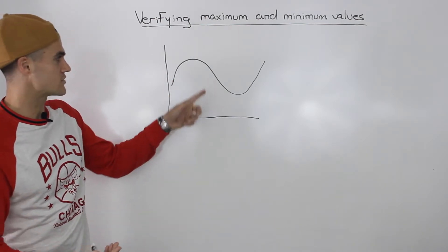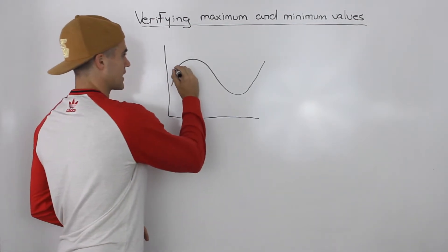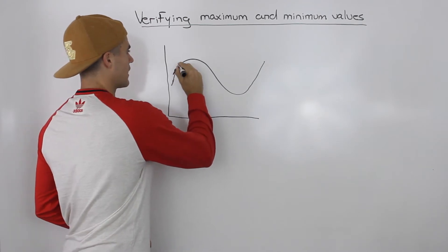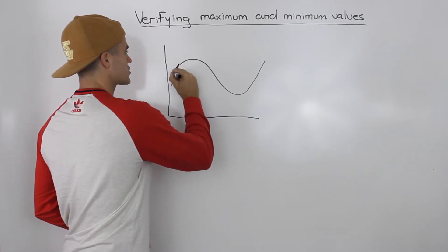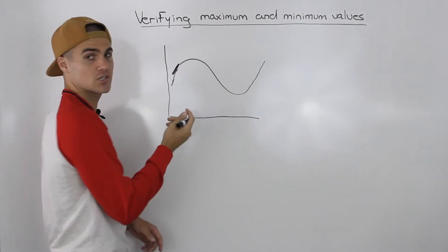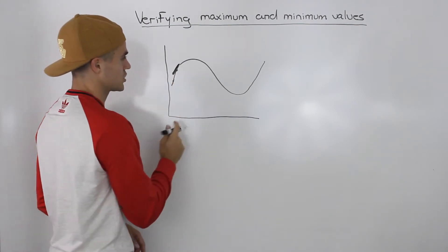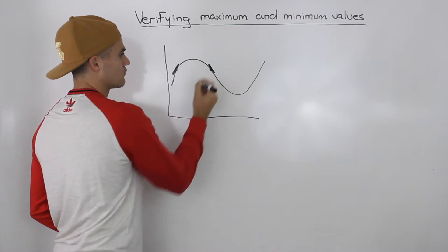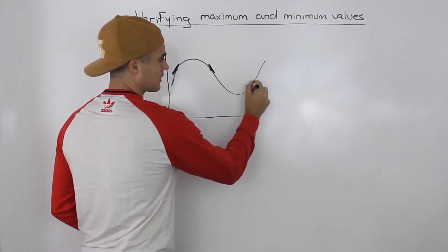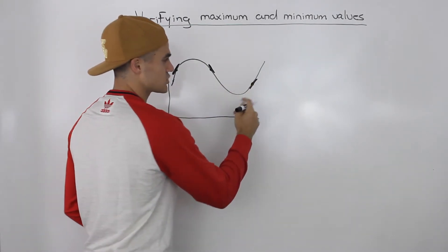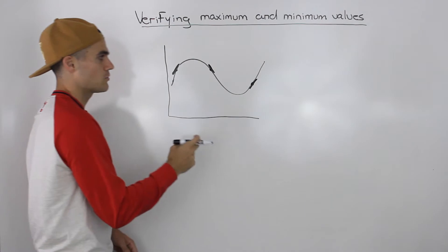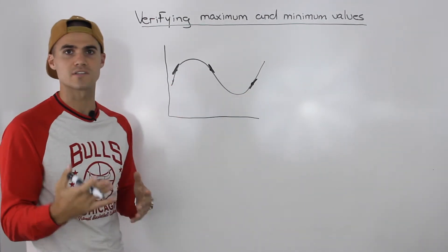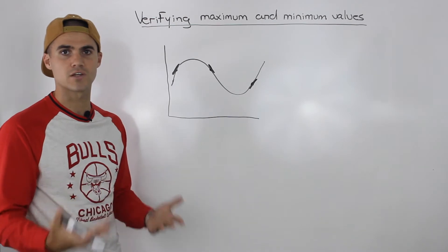So for example, if we have this graph here and we want to find the instantaneous rate of change at this point, we have to find the slope of that tangent if we draw a tangent on the function at that point. Or if we want it at this point, draw a tangent there, find its slope. Or here again, draw a tangent, find its slope — and now you're finding the instantaneous rate of change at specific points. We have different methods for which we can do that.